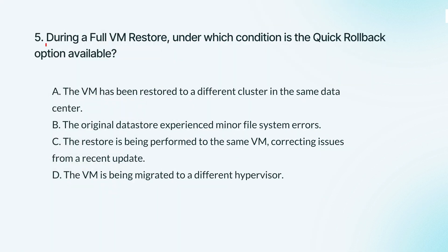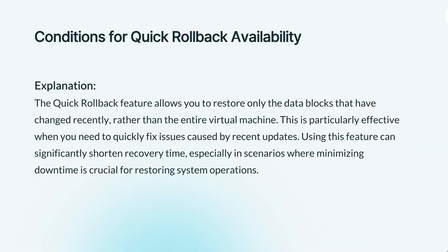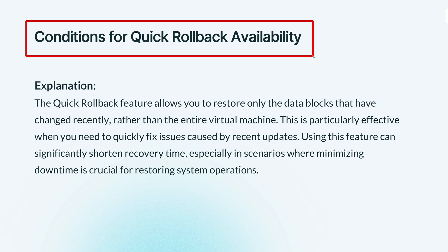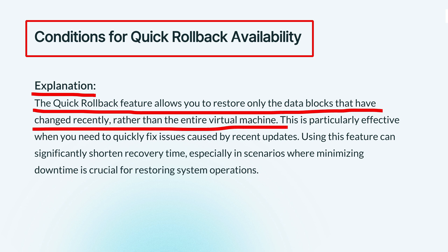Question 5. During a full VM restore, under which condition is the quick rollback option available? The knowledge points of this question are conditions for quick rollback availability. Quick rollback lets you restore just the recent changes in a virtual machine, which is faster than restoring everything. It's handy when you need to fix something that went wrong after a recent update.